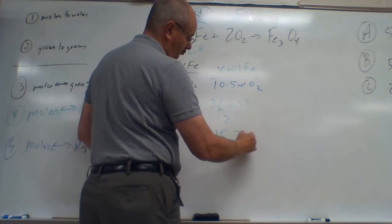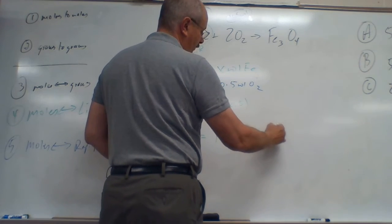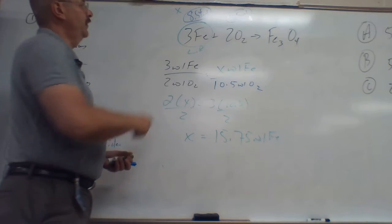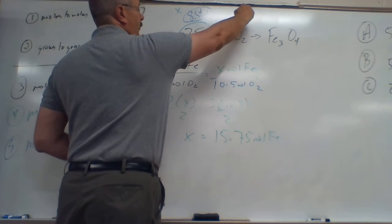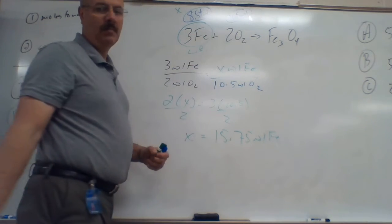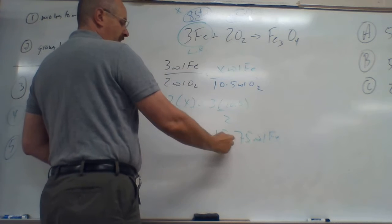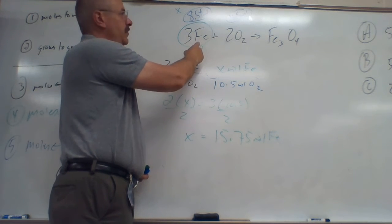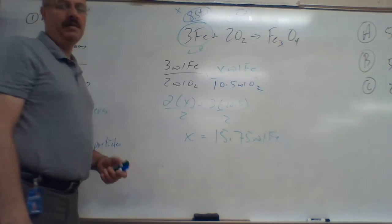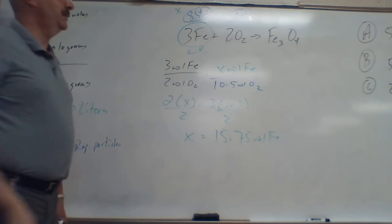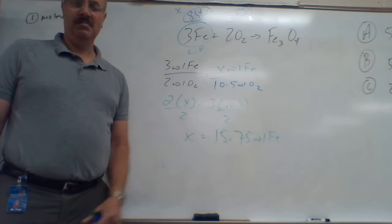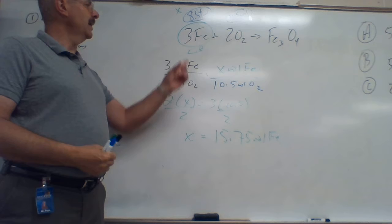And that's moles of Fe. So now again, what does this mean? It's saying if I use all 10.5 moles of this guy, then what I need is 15.75 moles of Fe. Do you have 15.75? No, we only got 8.54. So what does that tell me? It still tells me Fe is my limiting reagent.